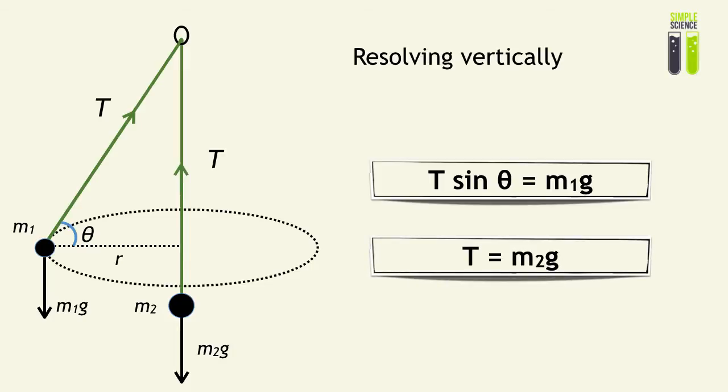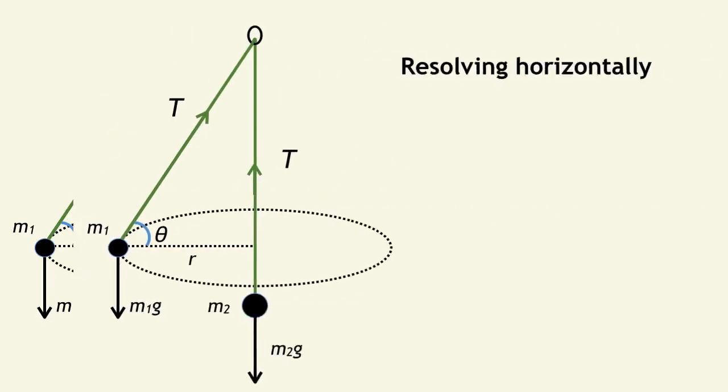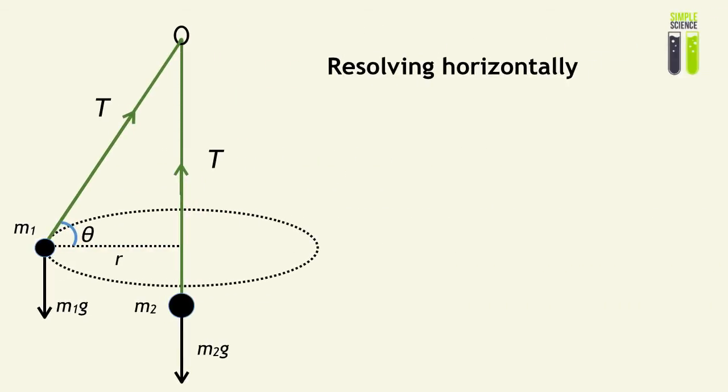They're acting in opposite directions. Now we can resolve horizontally. When we look at M2, we can see that it has no resultant horizontal component.